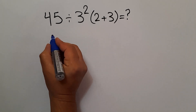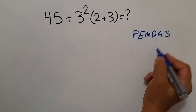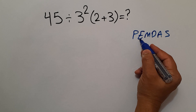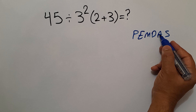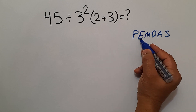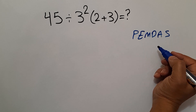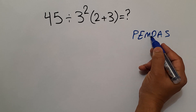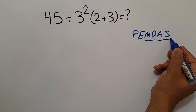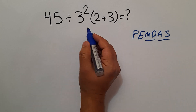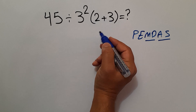According to the order of operations, which is PEMDAS: P stands for Parentheses, E stands for Exponents, M and D stand for Multiplication and Division, and A and S stand for Addition and Subtraction. We first do parentheses, then exponents, then multiplication and division, and finally addition and subtraction. Remember that multiplication and division have equal priority and we work from left to right; the same applies to addition and subtraction.